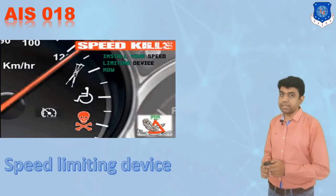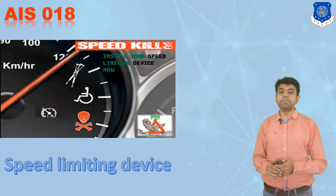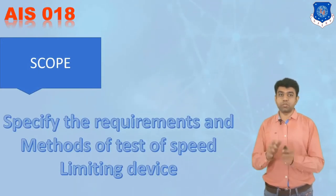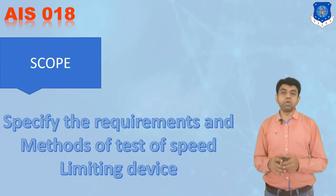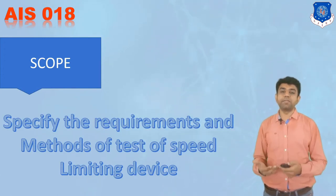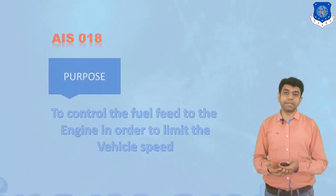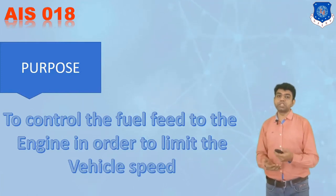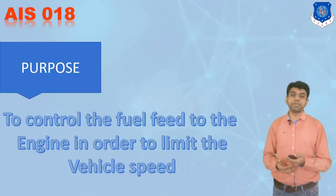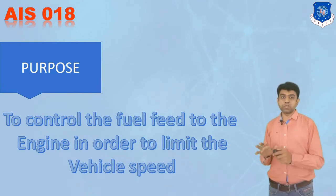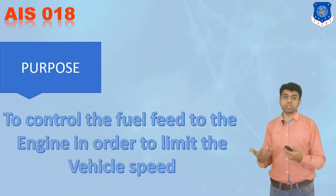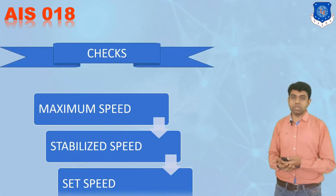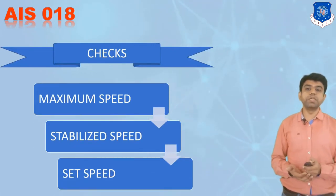The next standard is AIS 018, which is for speed limiting devices. There are certain speed limiting devices kept in a vehicle to ensure proper safety. The scope is to specify the requirements and the method of testing speed limiting devices. A speed limiting device is used to control the fuel feed to the engine in order to limit the vehicle speed. The checks include the maximum speed, stabilized speed, and the set speed of the vehicle.